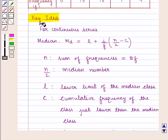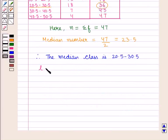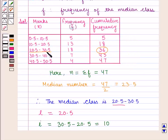Now using the key idea we know that for continuous series median is given by L plus I upon F into N by 2 minus C, where L is the lower limit of the median class that is 20.5. I is the width of the median class given by 30.5 minus 20.5 that is 10.